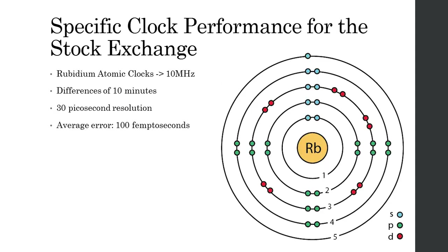Now, specific clock performances for the stock exchange. They use rubidium atomic clocks that operate at 10 MHz. The phase comparators can measure differences of up to 10 minutes. They also have 30 picoseconds of resolution, and the average error is 100 femtoseconds.